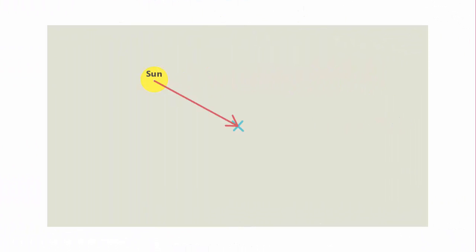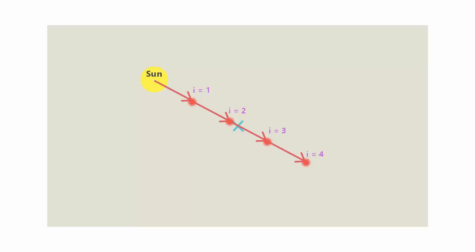So what we've done here is we've taken that vector from the sun to the center, we've scaled it using the spacing value so the length of this vector is now how far apart the flare textures should be rendered, and then we multiply this by i, which is basically the flare texture's number or index, so that each texture is rendered further along the line. And of course we have to add this vector to the sun's position on the screen, as that's where we want the first flare to be rendered.